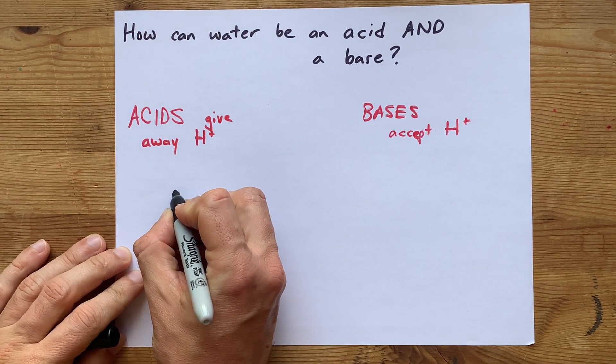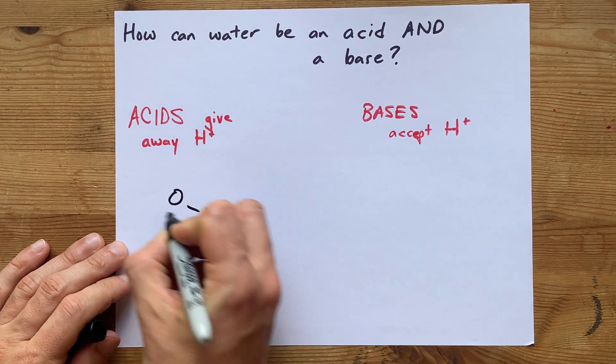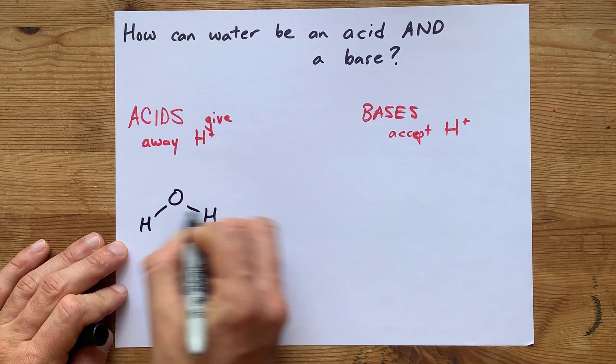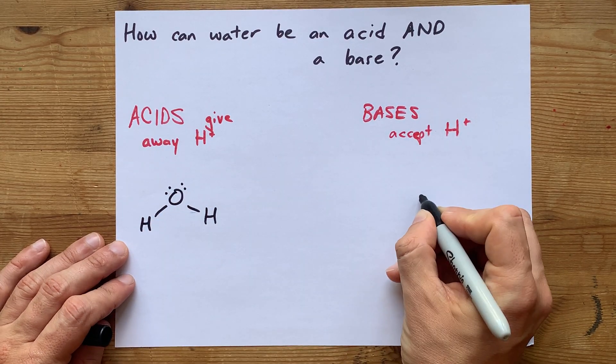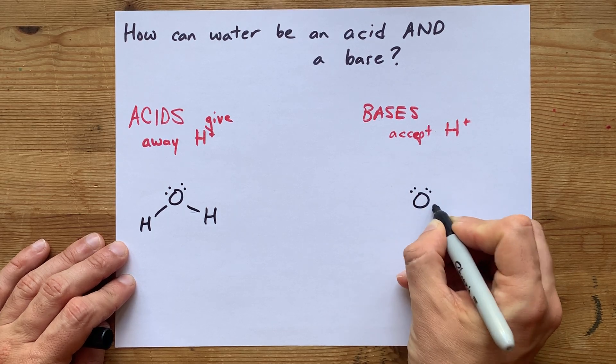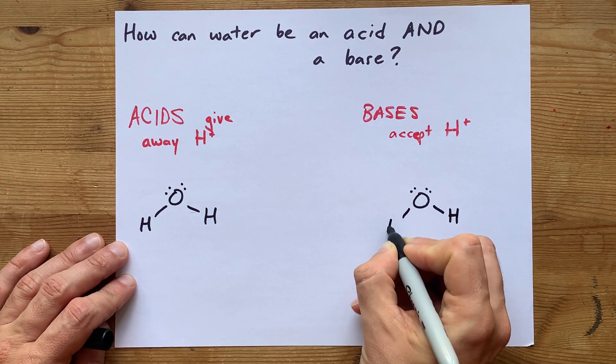Let me remind you what the Lewis structure of water is. It's an oxygen connected to two hydrogens, and the oxygen has two lone pairs on it. Those lone pairs are going to play a significant role when it comes to being a base.